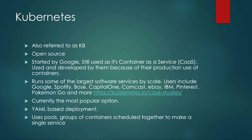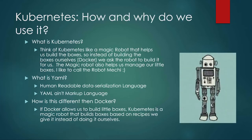Kubernetes uses something called YAML, which we're going to talk about in a second, and it uses pods — groups of containers — to make a single service. The idea is Kubernetes is the way that we are able to manage all of these boxes, including creating the boxes and then working with the boxes later.